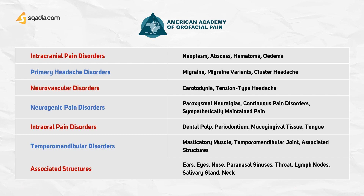The last classification is the American Academy of Orofacial Pain. It includes disorders with examples: intracranial pain disorders such as neoplasm and edemas; intraoral pain disorders including dentopulp, periodontium, and tongue; neurogenic pain disorders including proximal neuralgias; neurovascular disorders including tension-type headache; primary headache disorders including migraine; temporomandibular disorders including the temporomandibular joint and masticatory muscles; and lastly associated structures including ear, eyes, neck, and salivary glands.